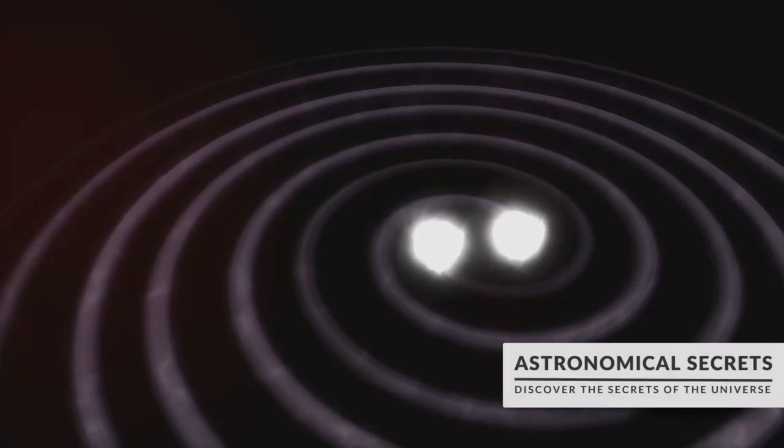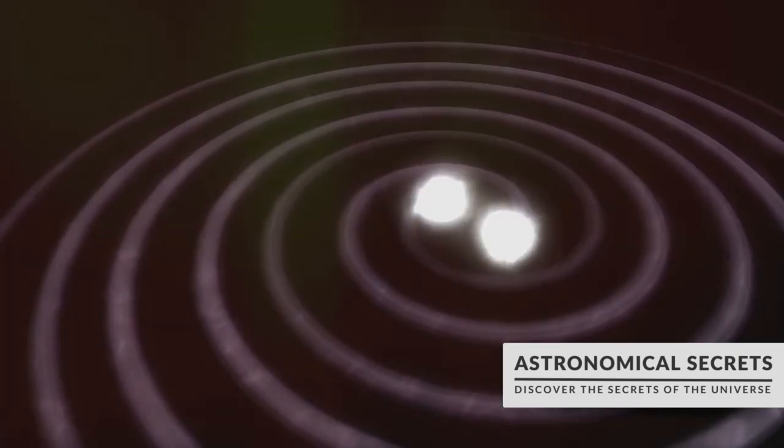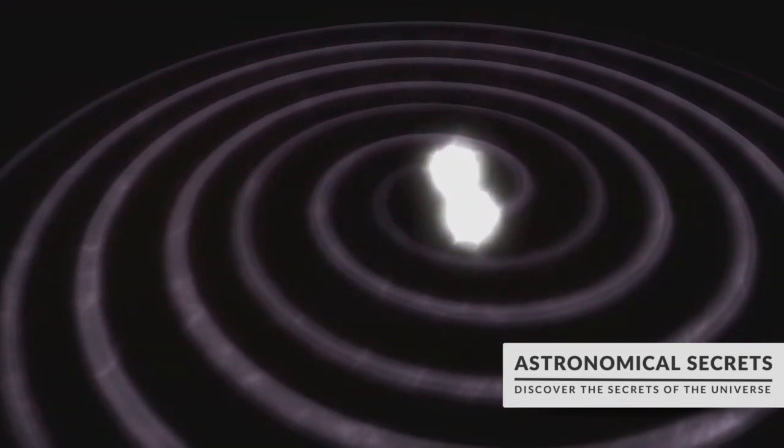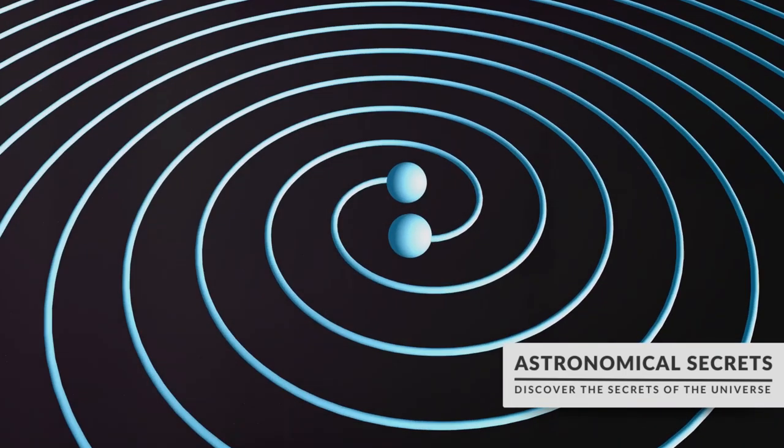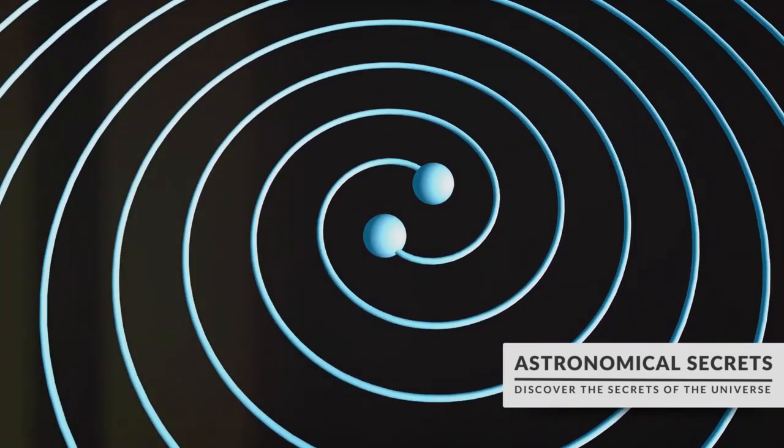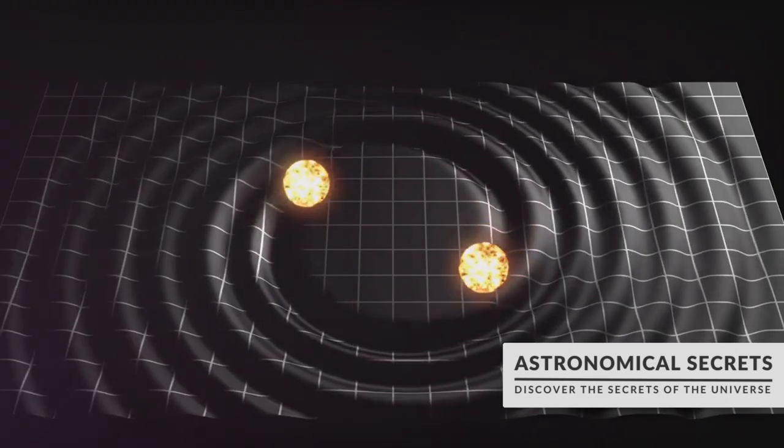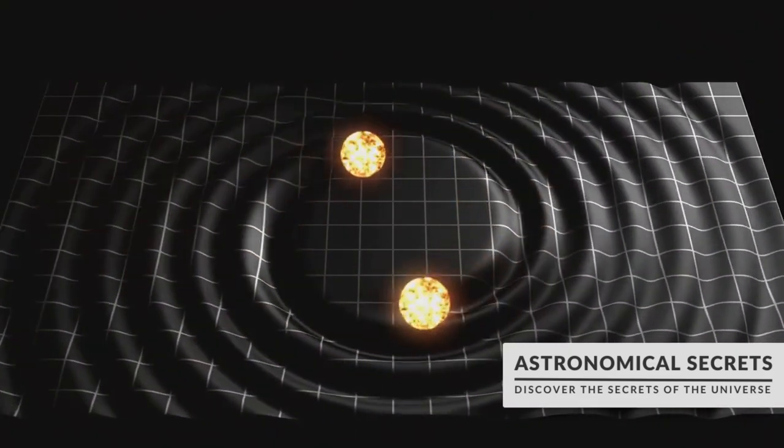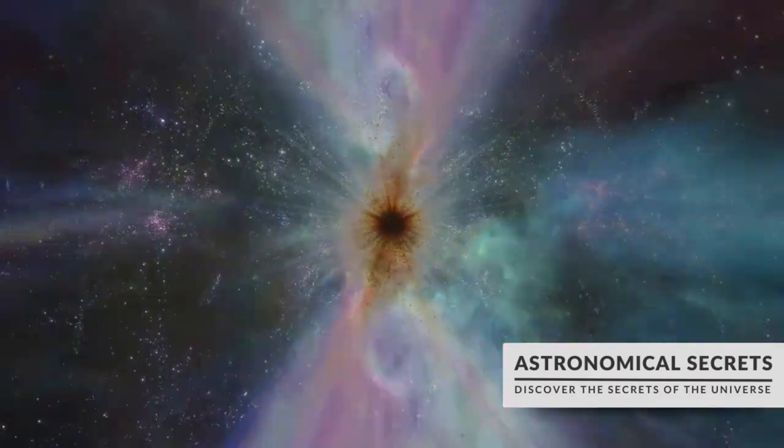But scientists are not easily deterred. They've developed a range of methods and tools to try and detect these elusive stars. One key tool in their cosmic toolbox is gravitational waves. These are ripples in the fabric of space-time caused by the most violent and energetic processes in the universe, such as the collision of two neutron stars. If quark stars exist, their formation and interactions should also produce gravitational waves, which we could potentially detect.